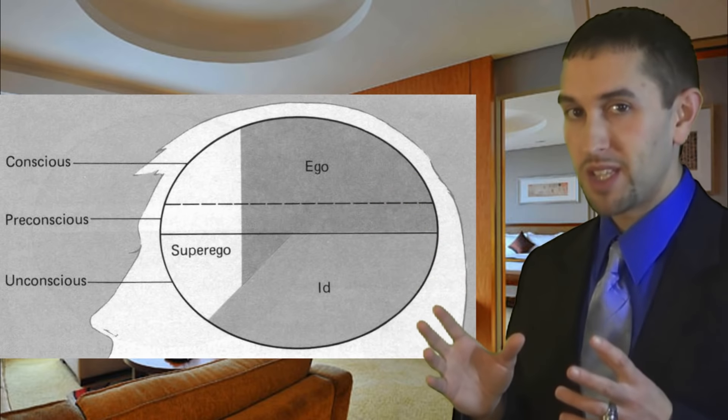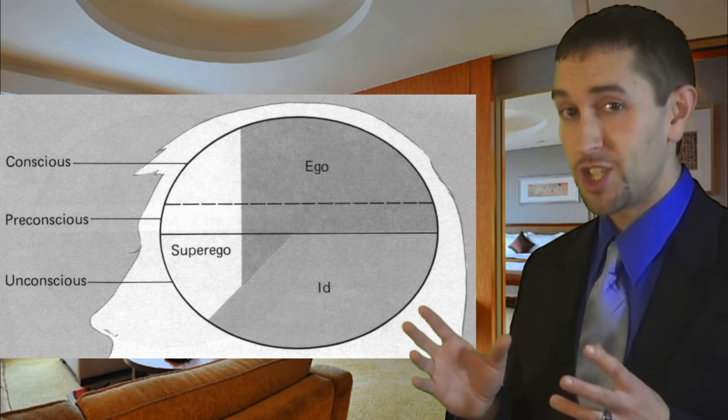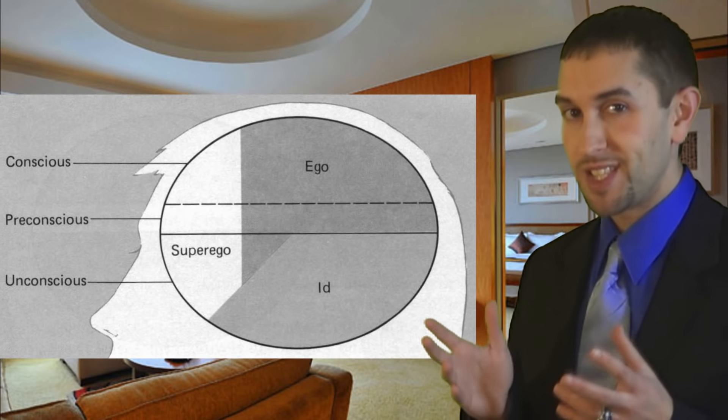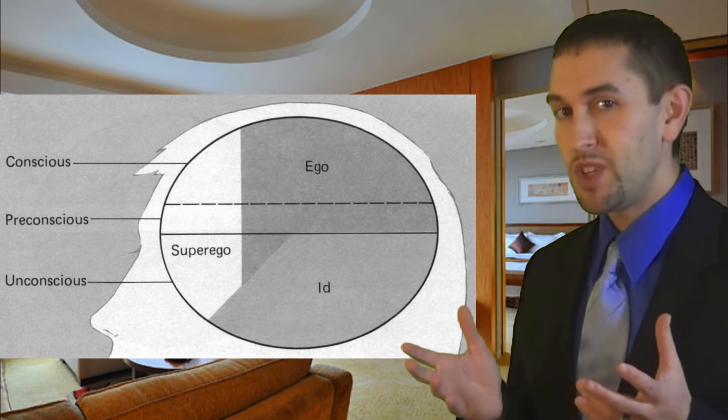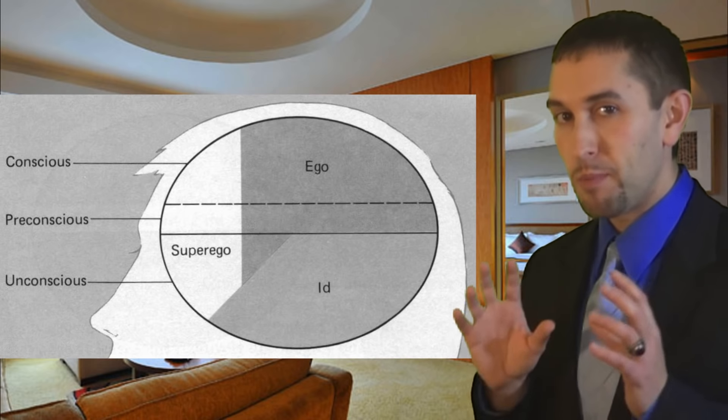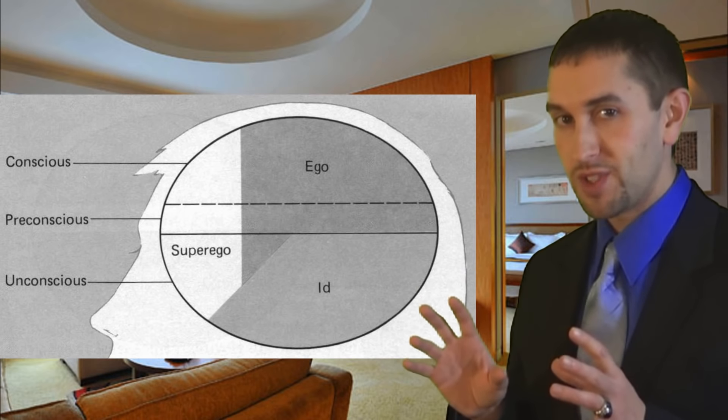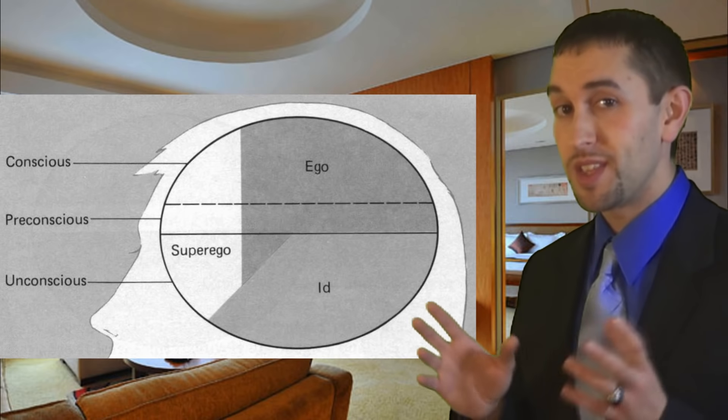Each of the three parts of the mind develops at a particular age. First to develop is the id. When a baby is born, its mind is bombarded with instinctual drives, which are collectively called the id.